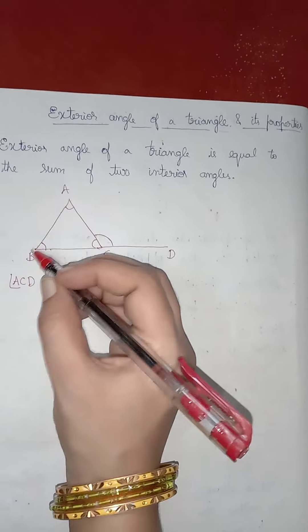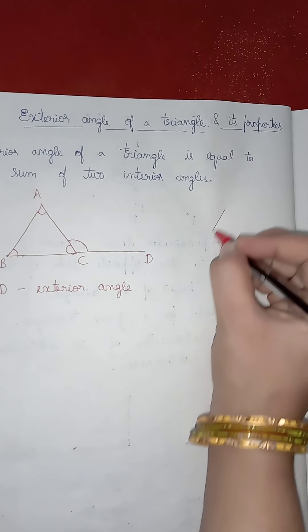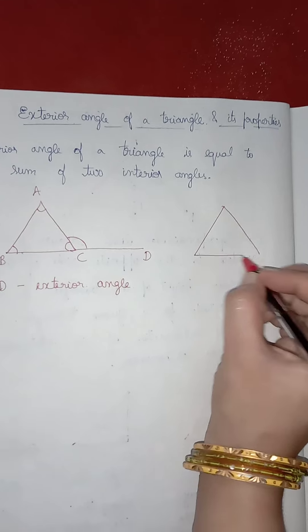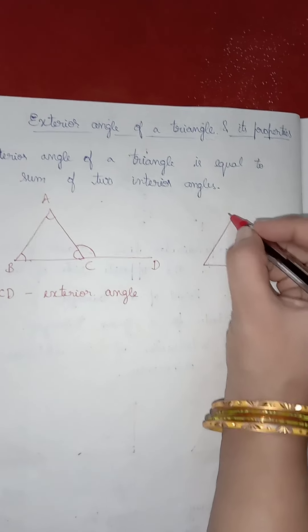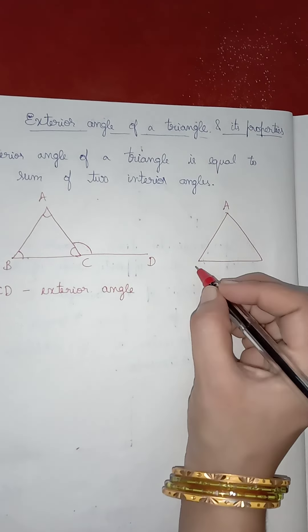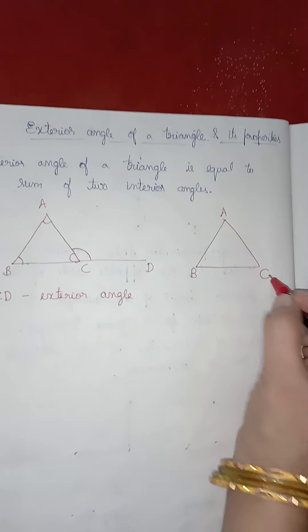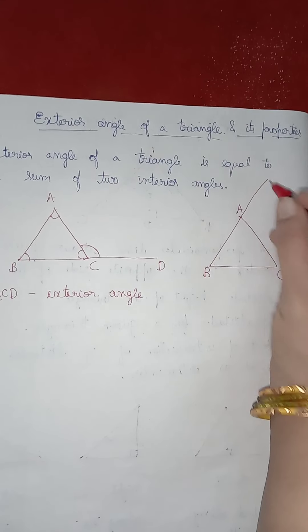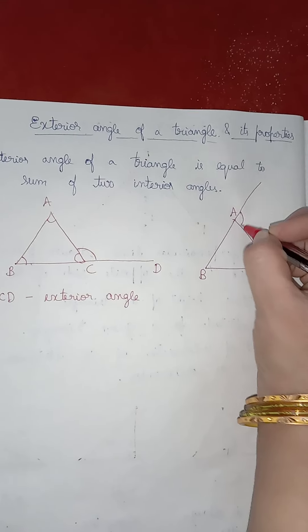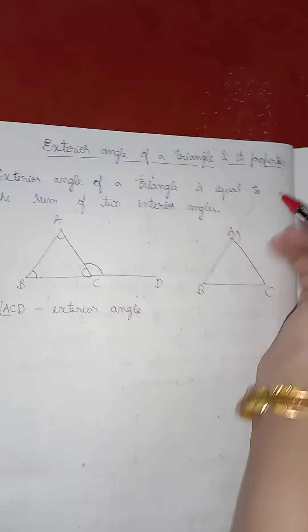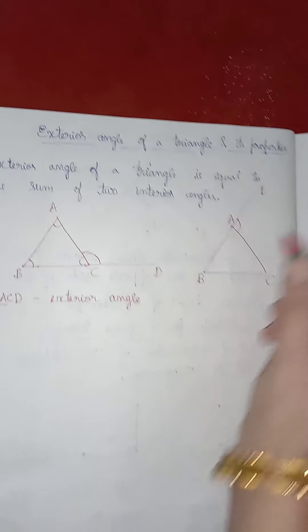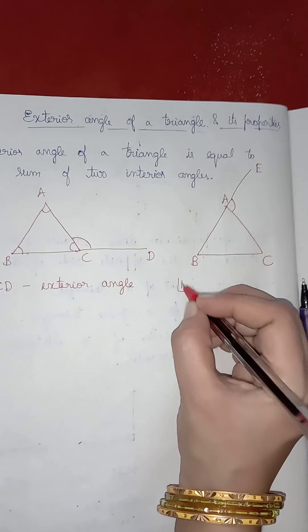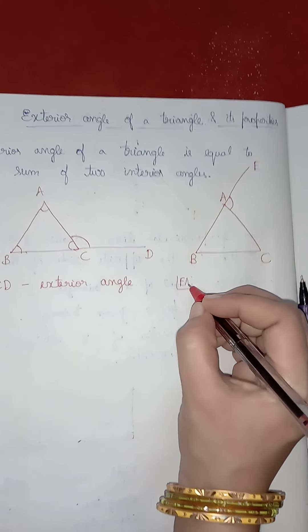Suppose you extend side A, B till point E. Draw triangle A, B, C and extend side AB till point E. Then angle E, A, C is the exterior angle.